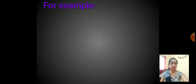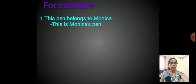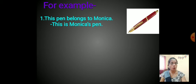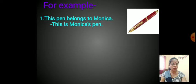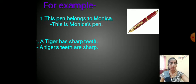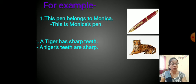For example, this pen belongs to Monica. The simple sentence is: This pen belongs to Monica. Using possessive form: This is Monica's pen — here we put the apostrophe-s. Next example: A tiger has sharp teeth. In possessive form: A tiger's teeth are sharp. Here again we add apostrophe-s.